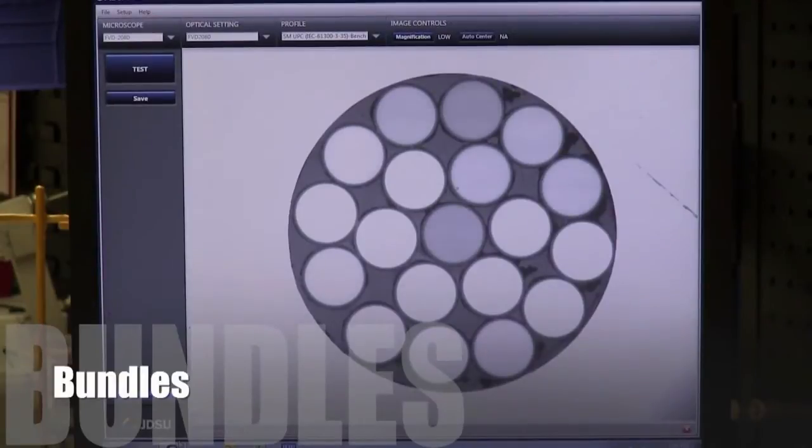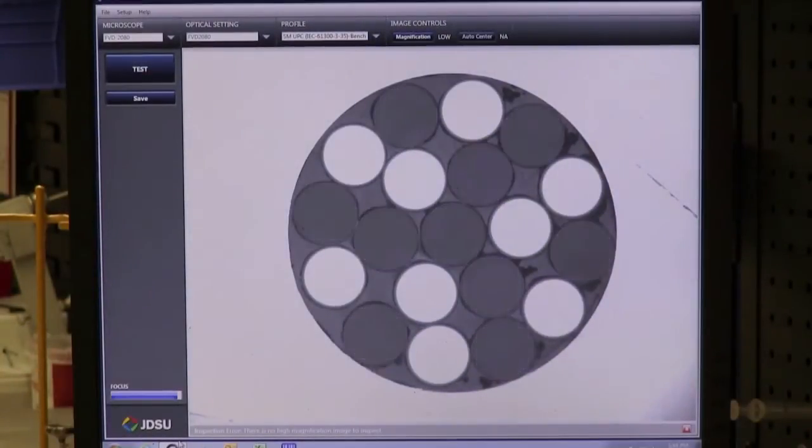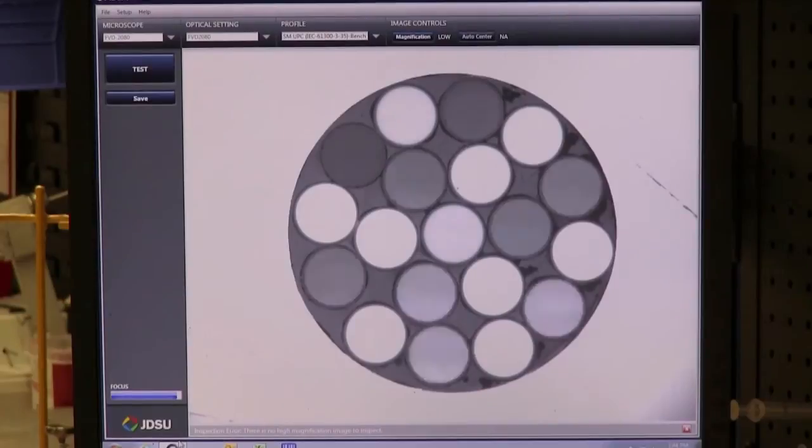Thorlabs manufactures straight and bifurcated fiber bundles with random or mapped fiber configurations. A technician maps each fiber in our 19 fiber wide bundles to ensure even distribution of the incident light.